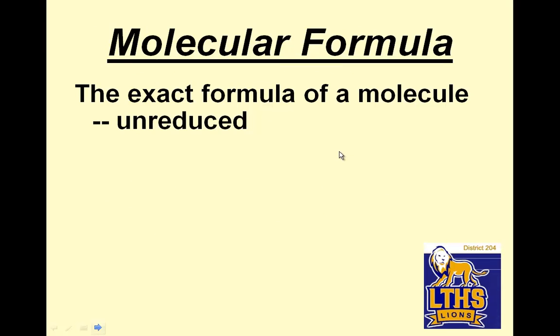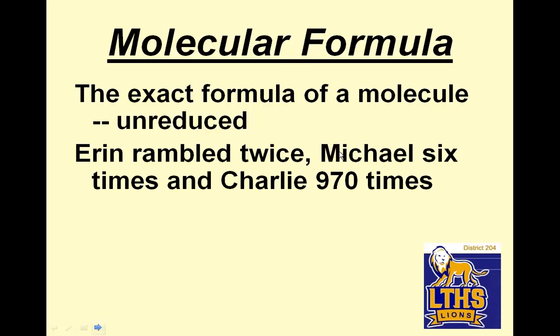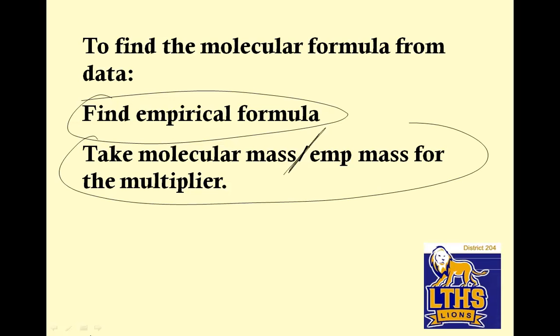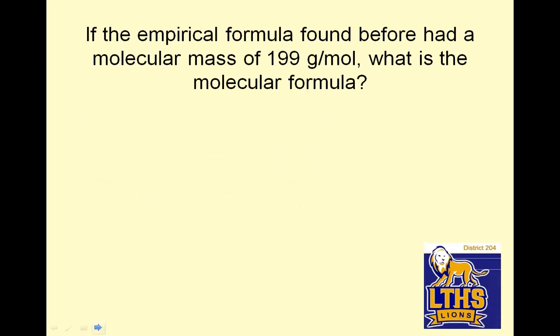Molecular formula is the exact formula. That's unreduced. So, Aaron rambled twice, Michael 6 times, and Charlie 970 times. So, M6, E2. I should have made this number something that's reducible. We'll pretend that's reducible. It's the exact number. To find the molecular formula from data, find the empirical formula, like you were shown before. We'll do tons more in class, I promise. Take the molecular formula and divide it by the empirical mass for the multiplier.